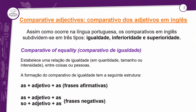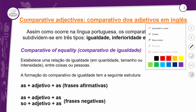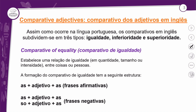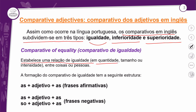Essa aula é um tema que vocês já tiveram na nossa língua nativa, no português. Agora vocês vão entrar na questão do inglês. Assim como ocorre na língua portuguesa, os comparativos em inglês subdividem-se em três tipos. Temos igualdade, inferioridade e superioridade — da mesma forma como no português. Vamos ver um pouquinho sobre o comparativo de igualdade — comparative of equality. Ele estabelece uma relação de igualdade em quantidade, tamanho ou intensidade entre coisas ou pessoas.